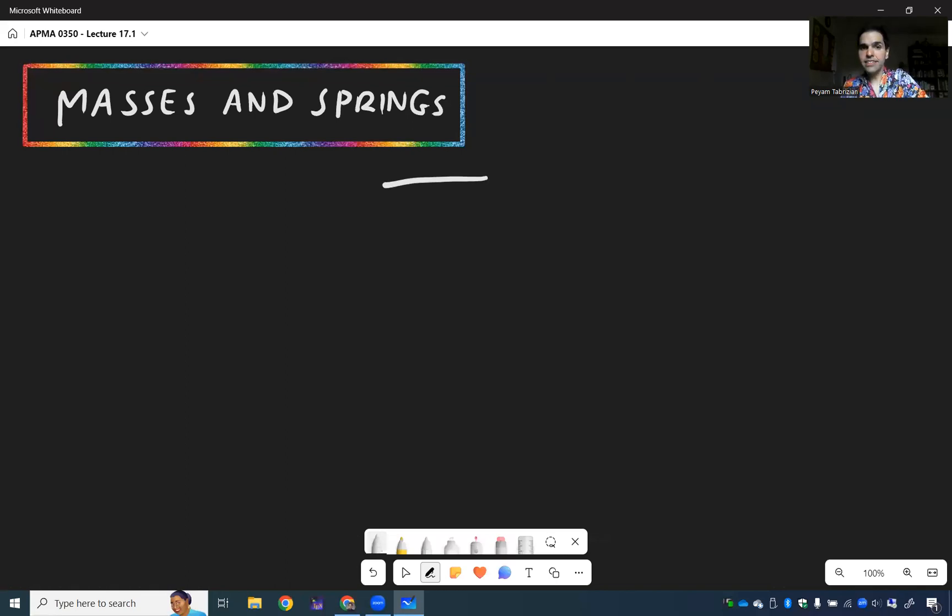So here's our setup. Suppose you have a mass that's attached to a spring, kind of like that. This is a spring, and at the end we have our mass here. Let's call this M.